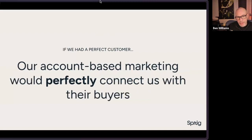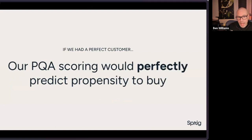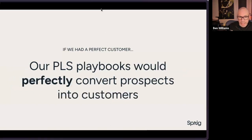If we had a perfect customer, our outbound engagement would be perfectly welcome — reaching out at the time and in the manner they're most receptive to. Our account-based marketing would perfectly connect us with their buyers — the right accounts targeted, the right buyers identified, and the right personalized strategies deployed to quickly reach key decision makers. Our PQA scoring — product-qualified account scoring — would perfectly predict propensity to buy, enabling the sales team to prioritize engagement with the right accounts at the right time. And our PLS, our product-led sales playbooks, would perfectly convert prospects into customers, running the right playbooks at the right time to nurture opportunities to a closed-won state.